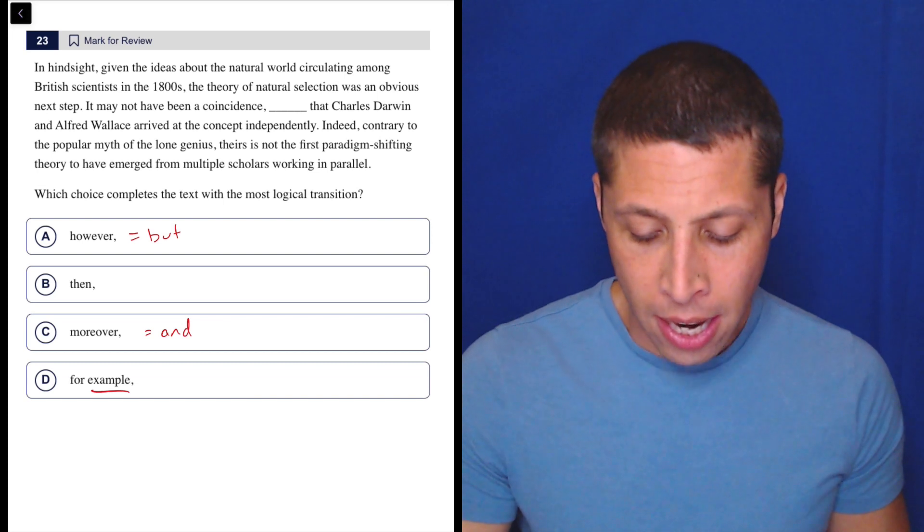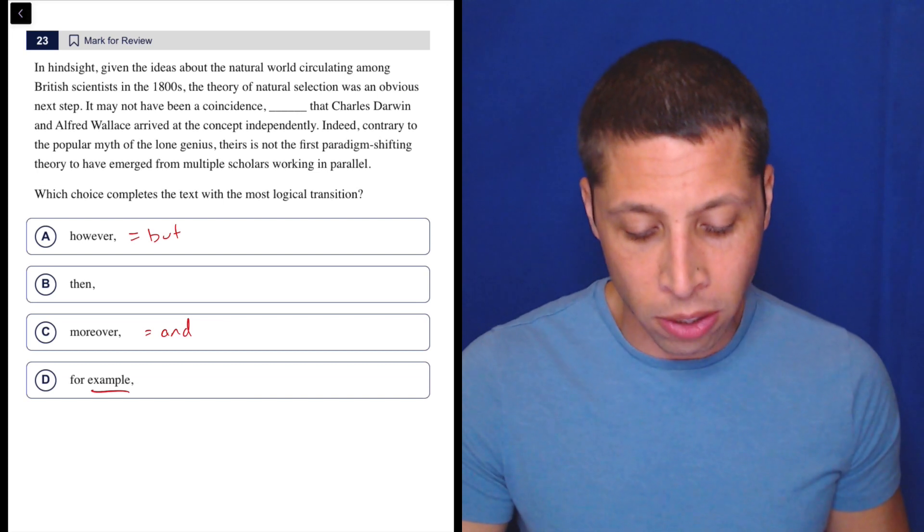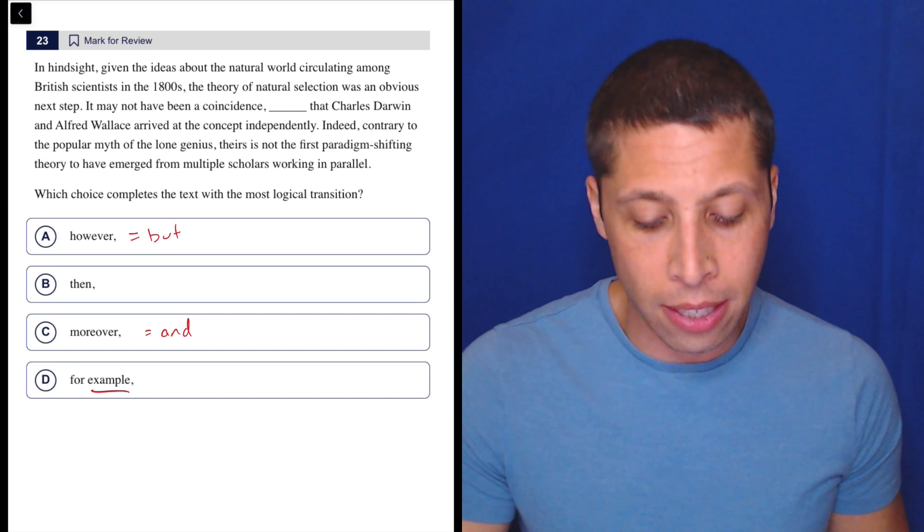So let's take a look at the sentences. In hindsight, given the ideas about the natural world circulating among British scientists in the 1800s, the theory of natural selection was an obvious next step.